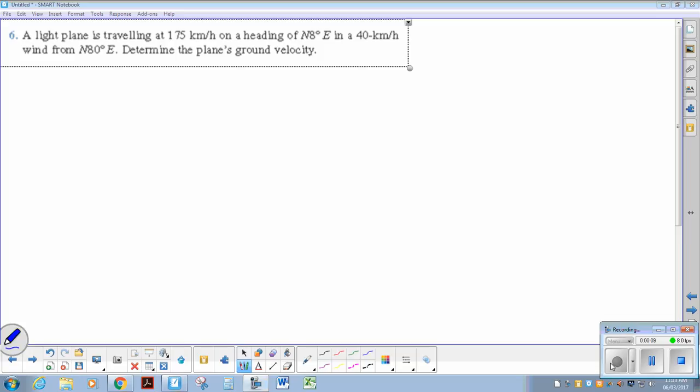A light plane is traveling at 175 kilometers on that heading, so I'm going to draw a Cartesian plane, north being up, east to my right. So this plane's heading north eight degrees east, so it's heading this direction.